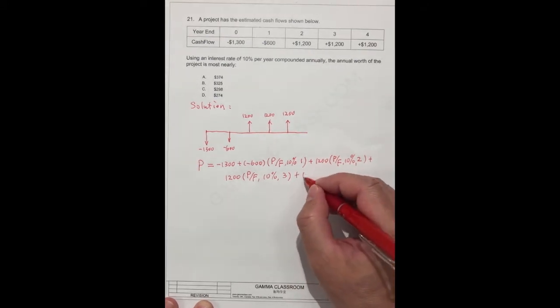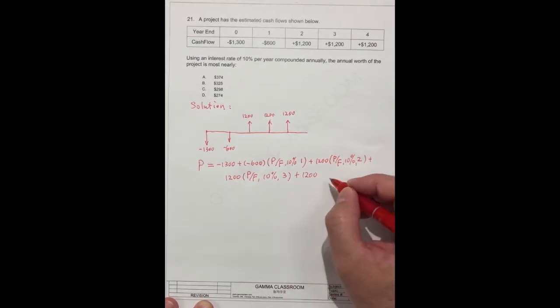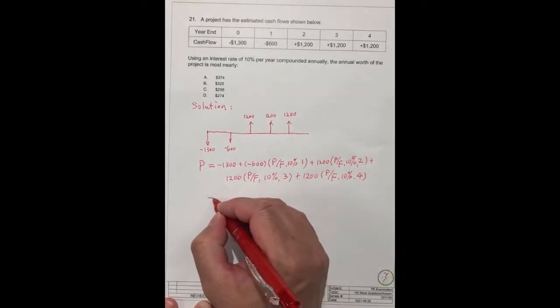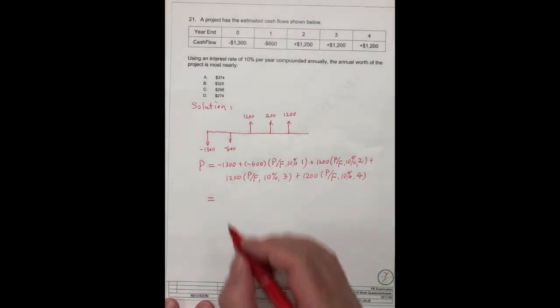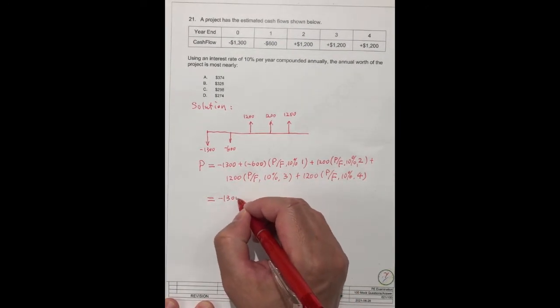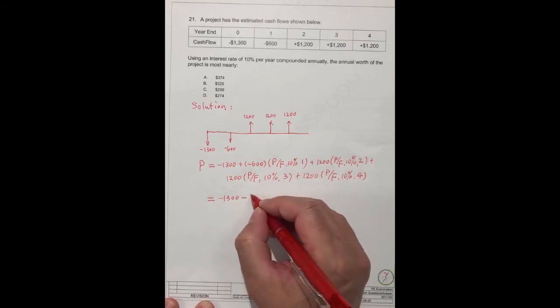And plus the last one, $1,200. What is the present value? We know the future value, we know the interest rate, we know the year, four years. So we can get this. This is no change, $1,300, and minus $600. What's this number? We need to look at the table.